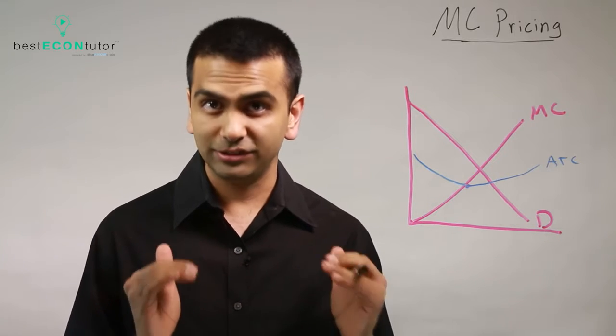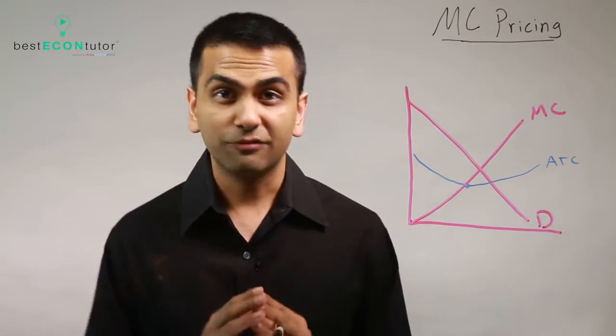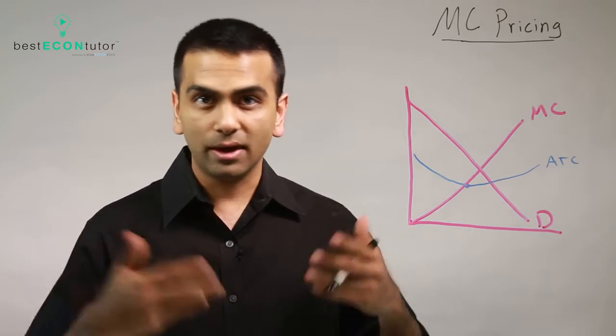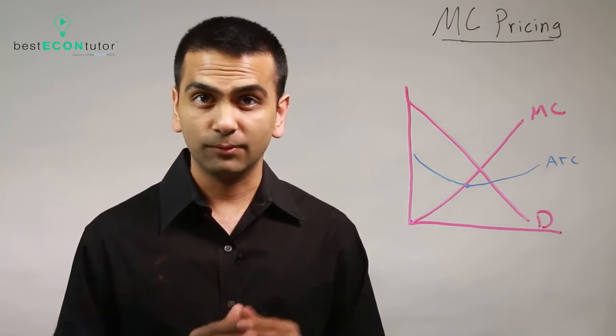What it is is a price ceiling. Basically, force the monopoly to set the same price that perfect competition would, and then they'll go up to that quantity and there won't be any deadweight loss anymore. Let's see how it would work.